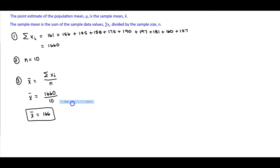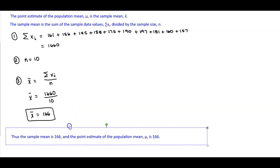Therefore, we can say that the sample mean is 166, and the point estimate of the population mean is 166.